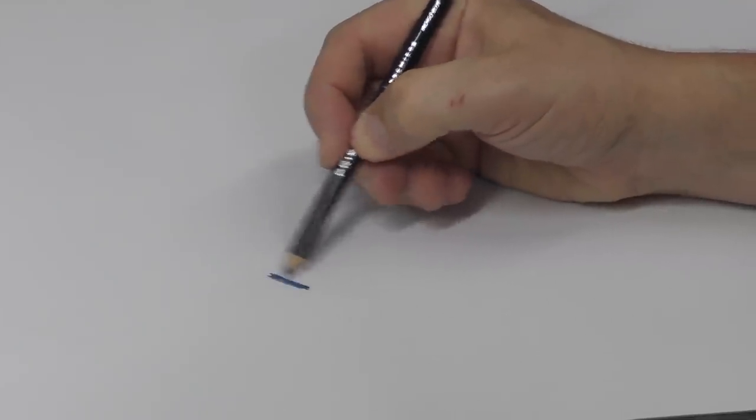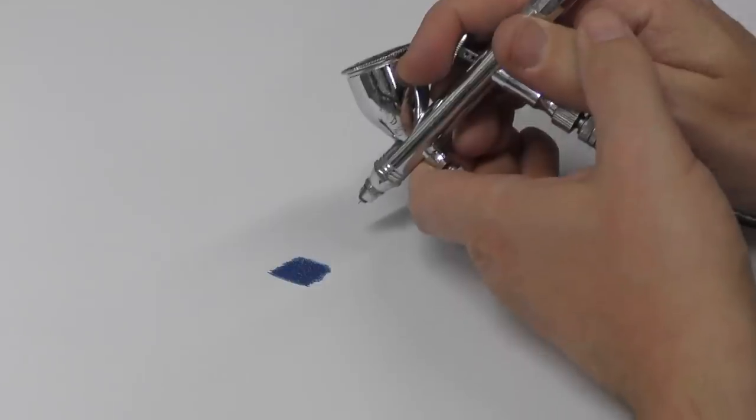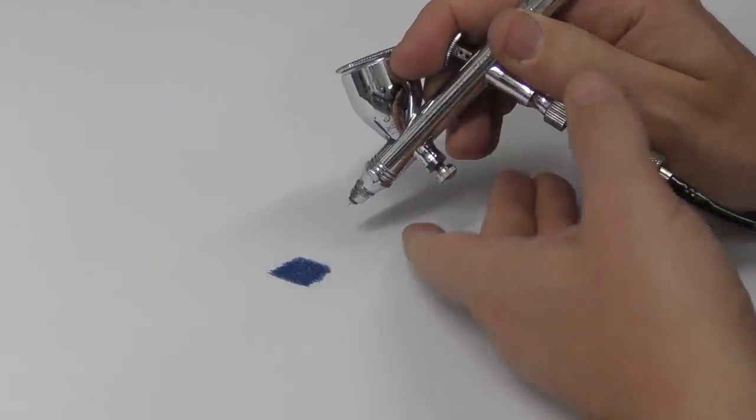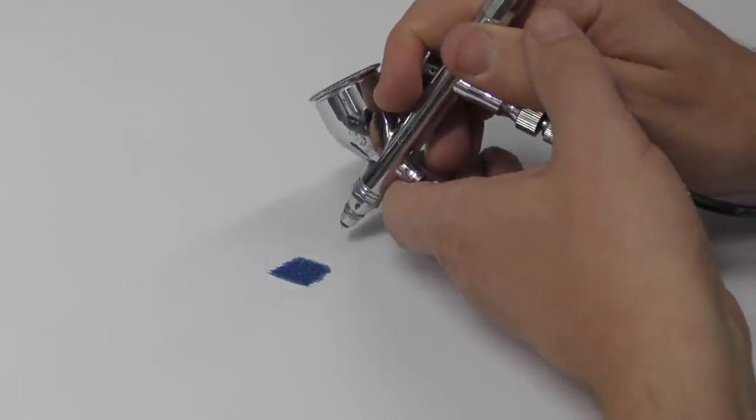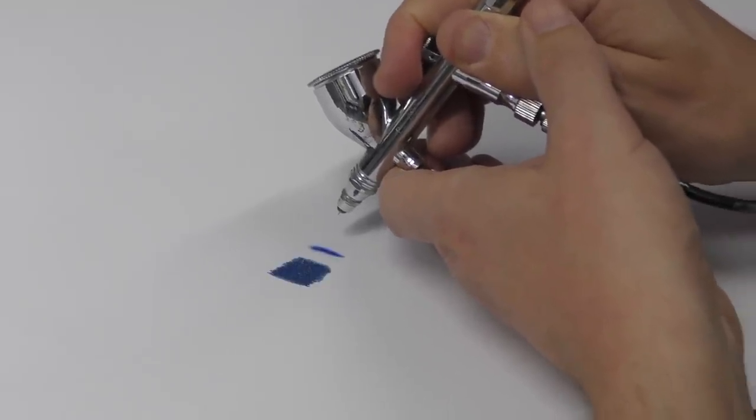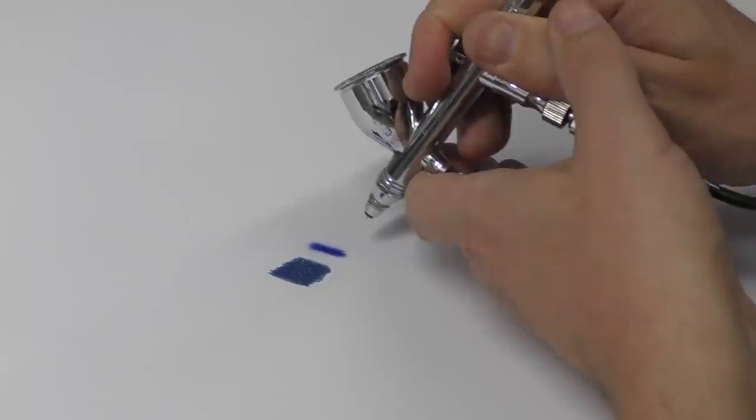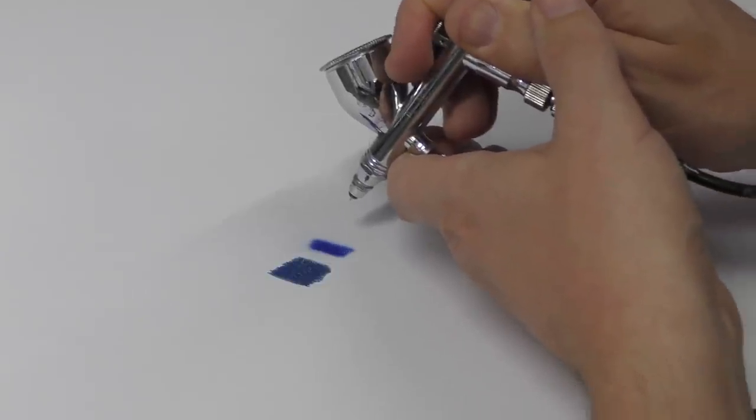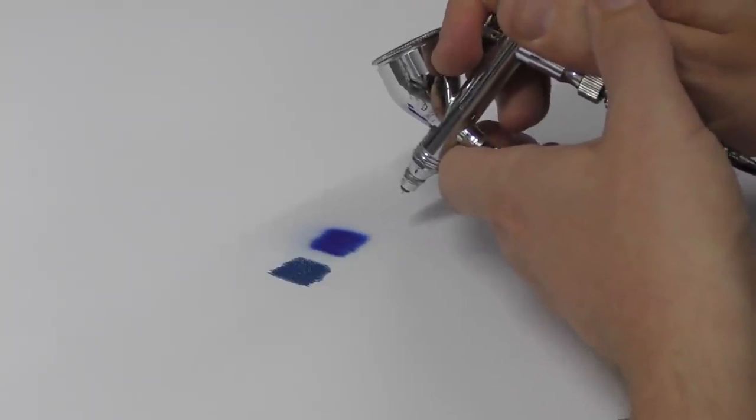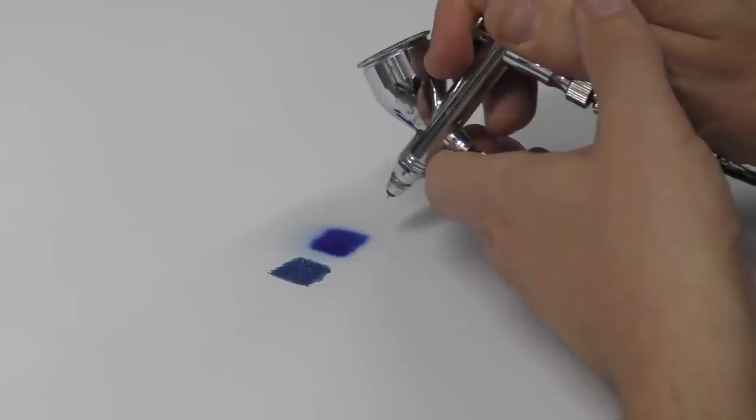Coloring in with a pencil is fairly easy to do. However, using an airbrush makes it a lot more difficult because you're not touching the surface and you need to control the amount of paint, plus you need great control over your double action technique. In this video, I'm going to show you how to improve your coloring in techniques or flat toning using an airbrush.